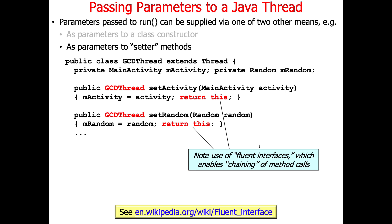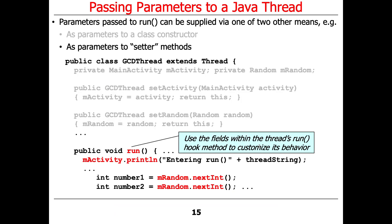Fluent interfaces are a very popular programming style. If you've taken a course on functional programming, you've seen this a lot — functional programming libraries use it very frequently, but object-oriented libraries do it now as well. So we can use this to chain methods together using the fluent interface pattern.